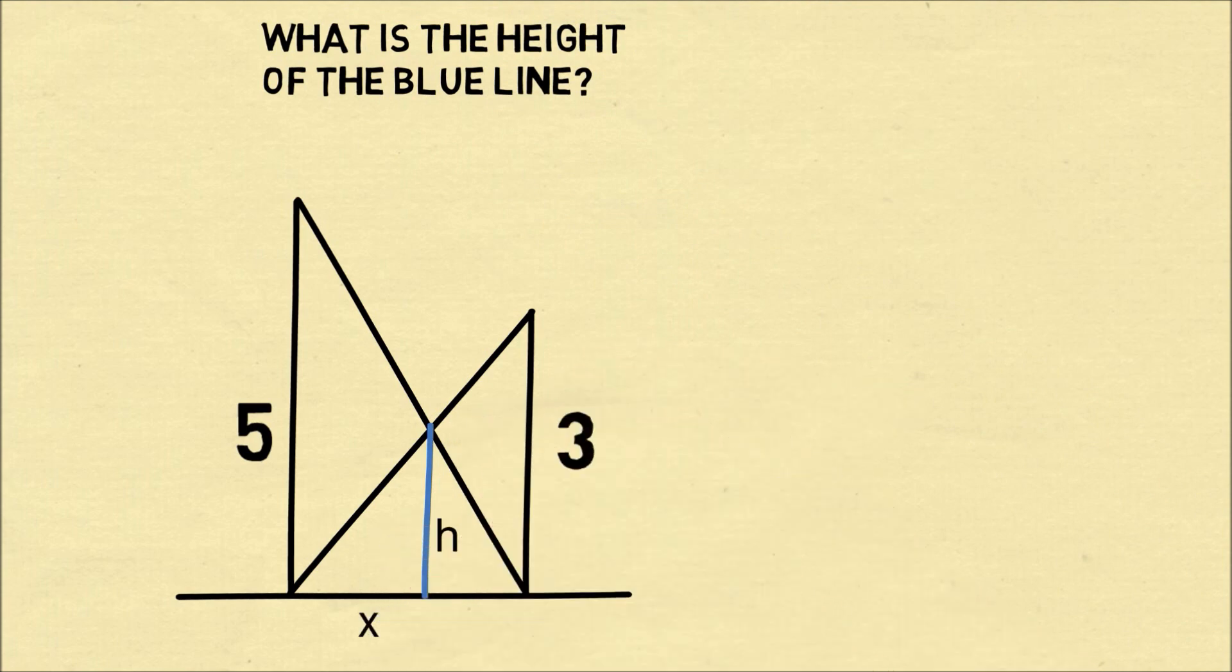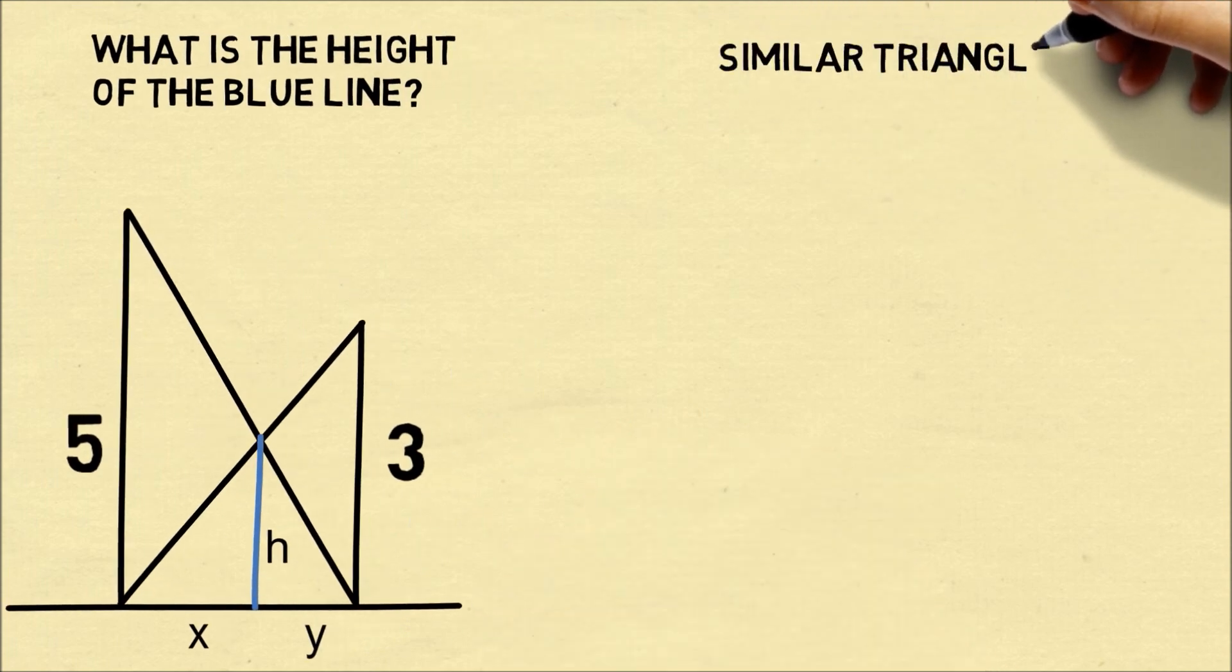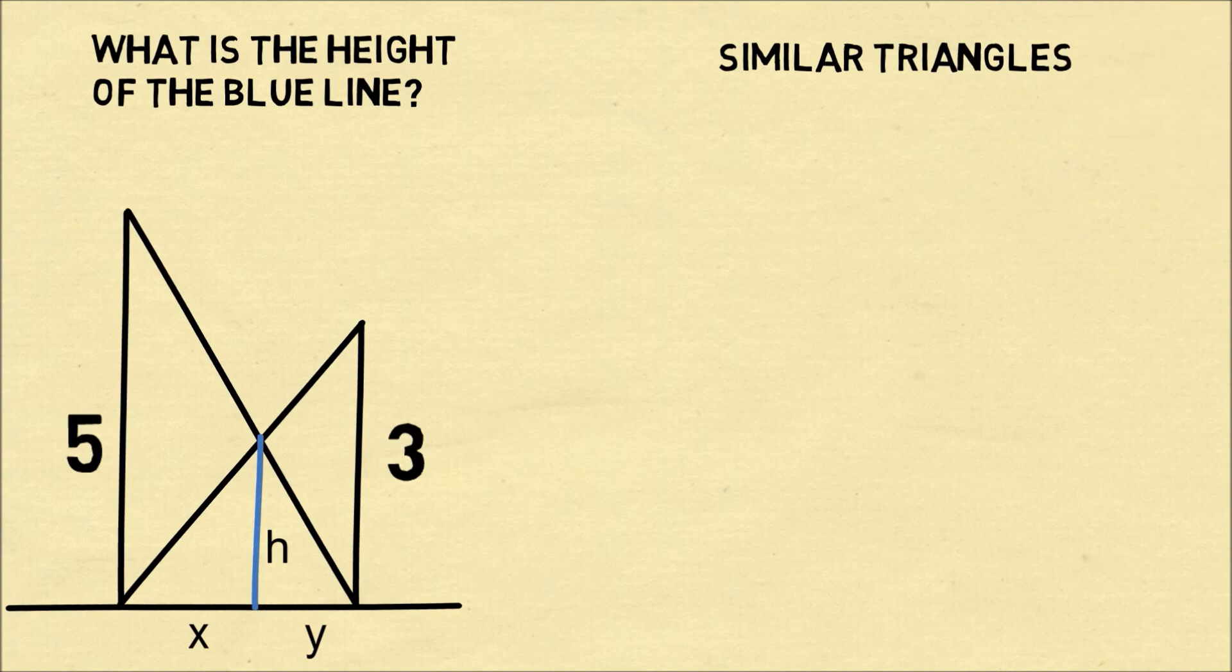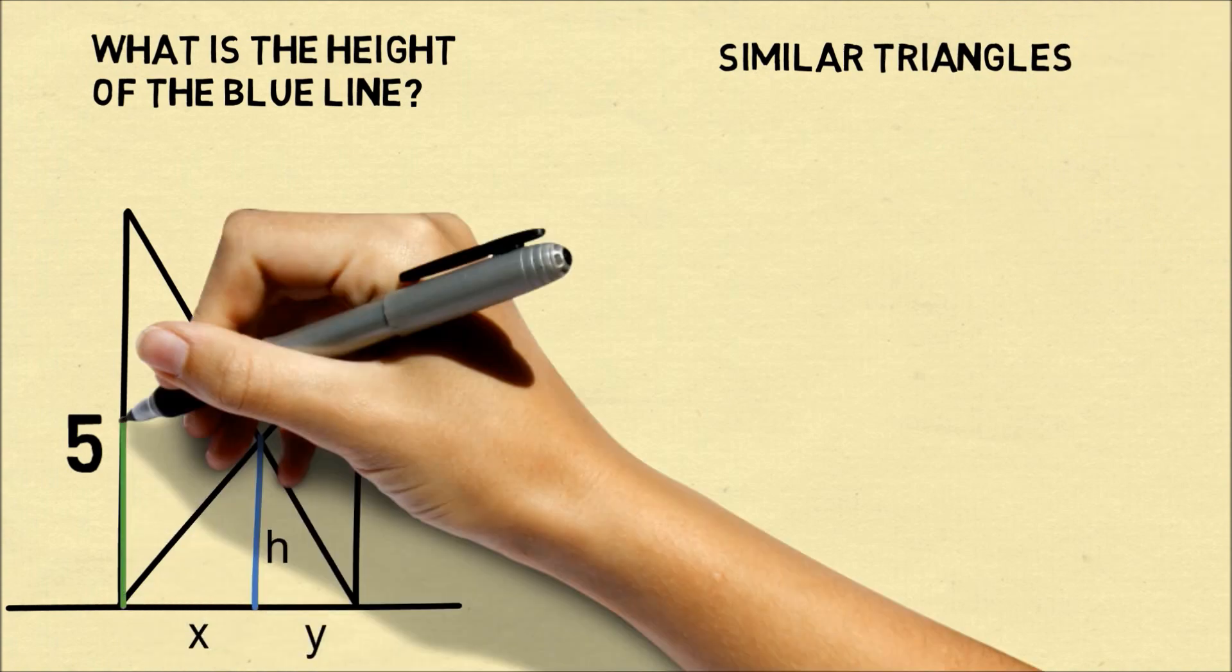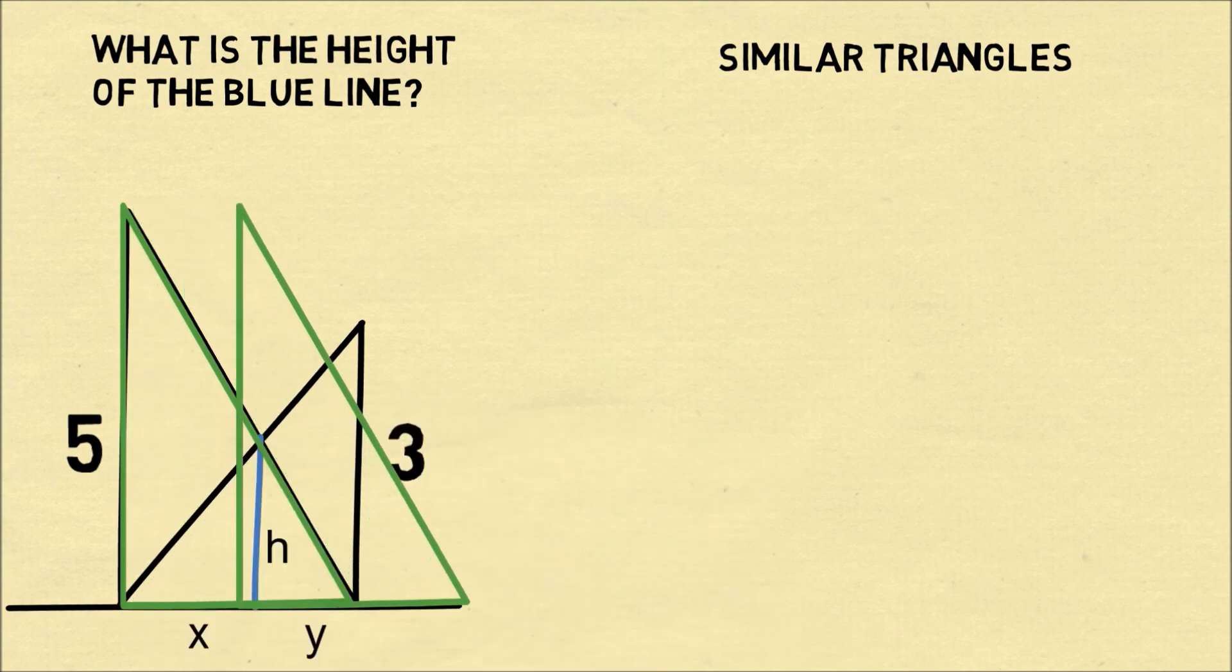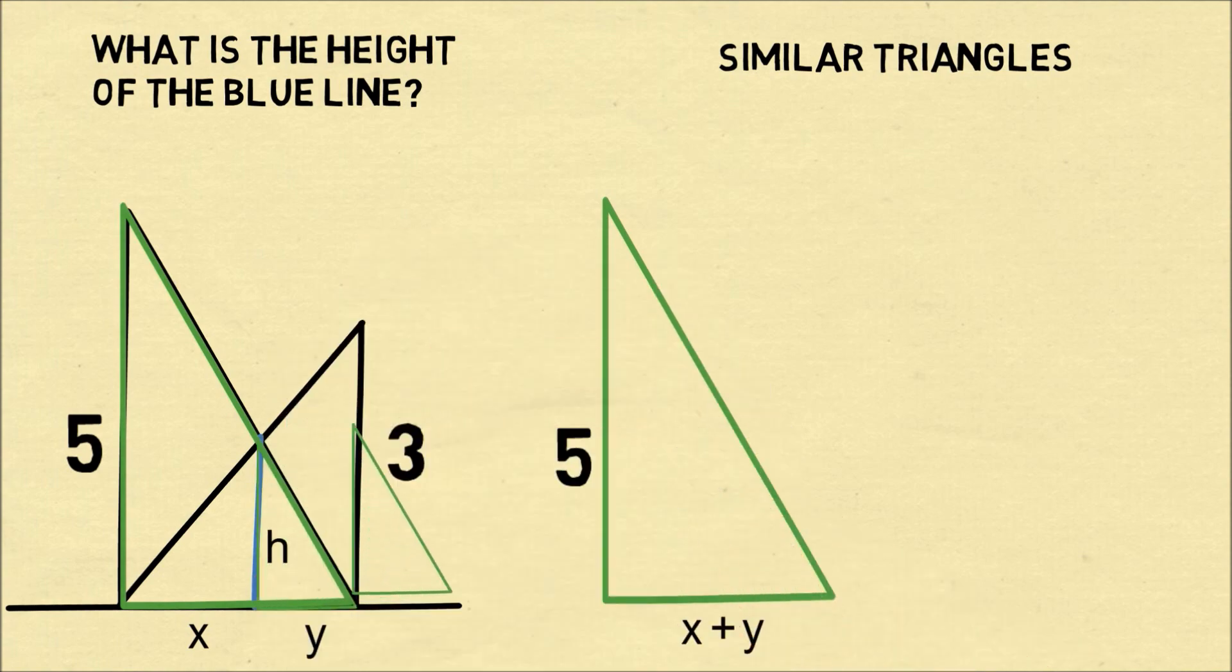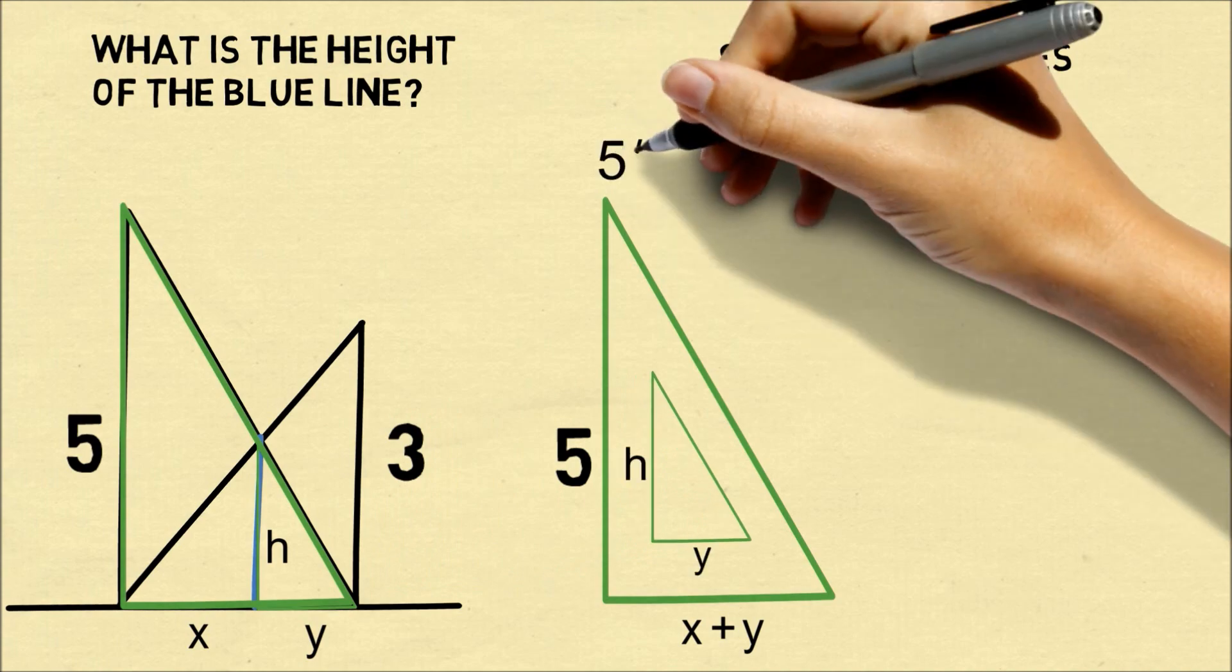We'll solve this problem by saying the height is h. We'll let the distance on the left be x and the distance on the right be y. Now we can create a series of similar triangles. So for the wall which has a length of five, we'll draw one triangle in green. And the smaller triangle right here that we've drawn in green will be similar to it. With similar triangles, the proportions are equal.